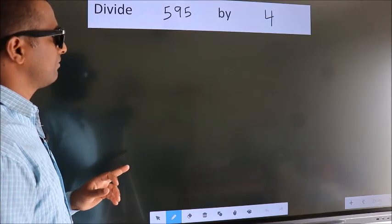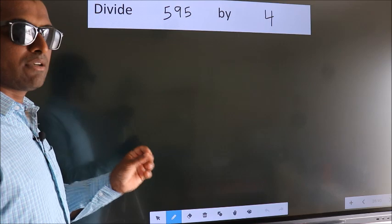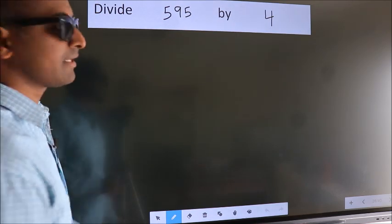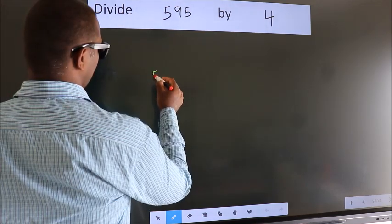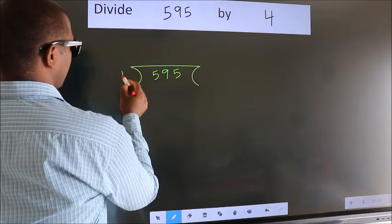Divide 595 by 4. To do this division, we should frame it in this way: 595 here, 4 here.